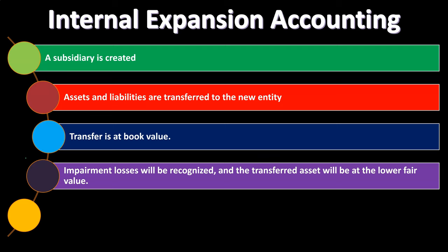It's useful to keep in mind the rationale for why in some cases you need to revalue things when creating a new entity — such as when two entities come together, using the acquisition method — as opposed to when you're expanding internally. Even if creating a new entity, you may be transferring assets from one entity to another using book value instead of revaluating. However, if there are impairment losses, those are going to be recognized, and the transferred assets will be at the lower fair value.